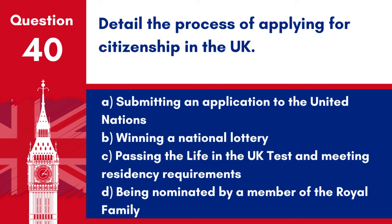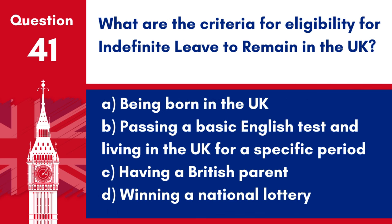Question 40: Detail the process of applying for citizenship in the UK. a. Submitting an application to the United Nations. b. Winning a national lottery. c. Passing the Life in the UK test and meeting residency requirements. d. Being nominated by a member of the royal family. Answer: c. Passing the Life in the UK test and meeting residency requirements. The process for applying for British citizenship includes passing the Life in the UK test, meeting certain residency criteria, and demonstrating knowledge of the English language.